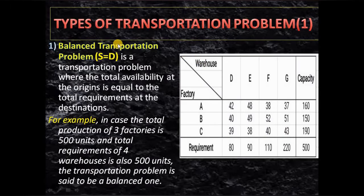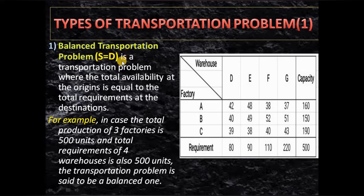Coming to the next topic: types of transportation problem. Based on capacity and requirement, there are two types. One is the balanced transportation problem, where supply equals demand — supply meets demand equally. A balanced transportation problem is one where the total availability at origin is equal to the total requirement at destination.